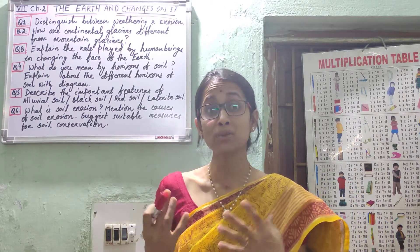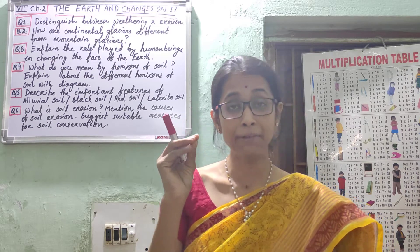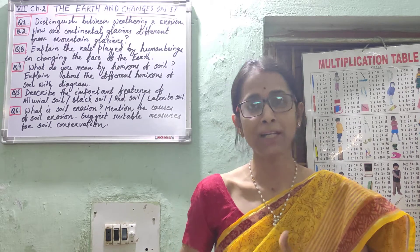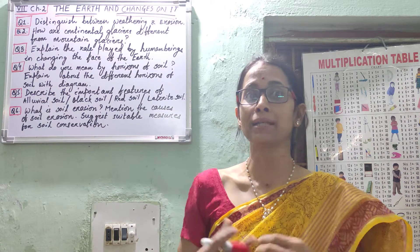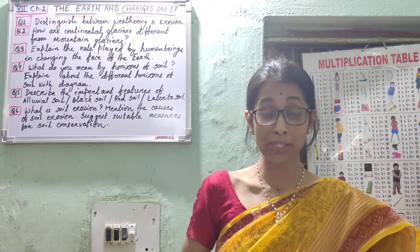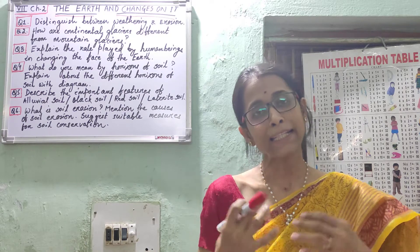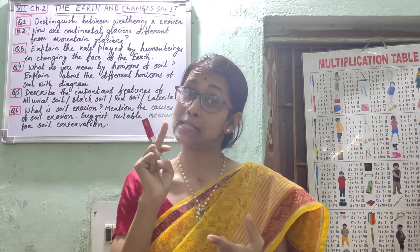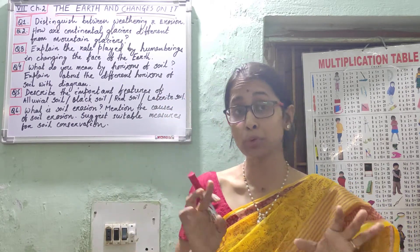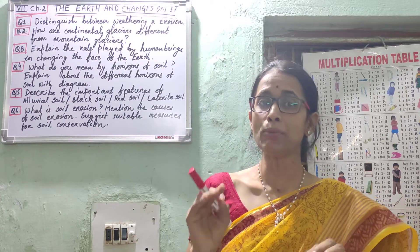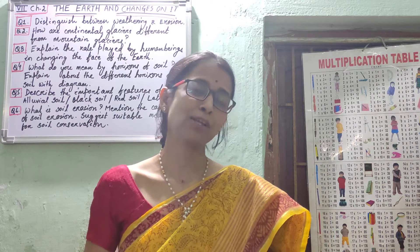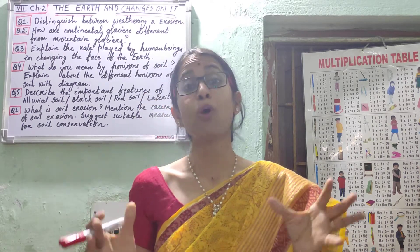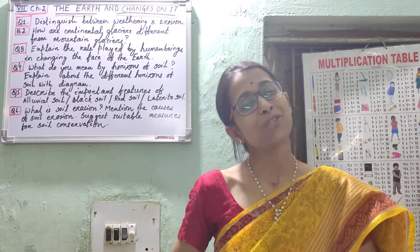Other questions can be asked about bold words in the book, such as erosional features formed by running water, or one erosional and one depositional feature formed by sea waves. For diagrams, practice the delta diagram and the soil layer diagram — both are very important with proper labeling. This covers all the internal questions from chapter 2. I hope this is helpful. Thank you children.